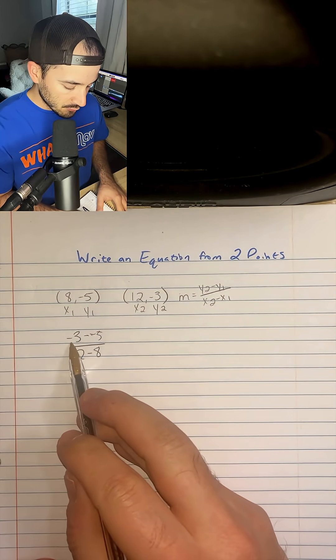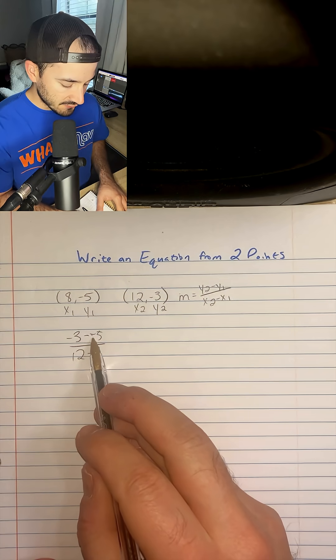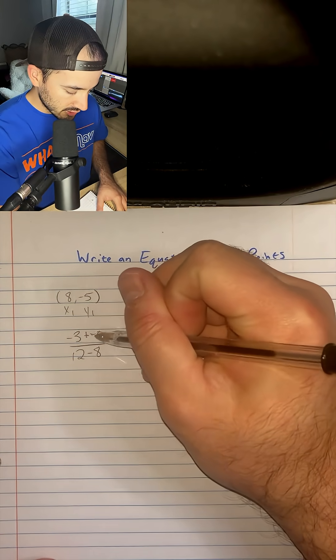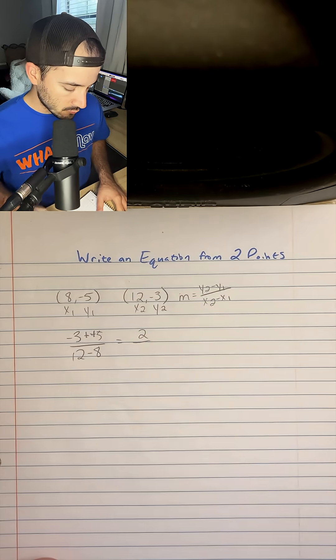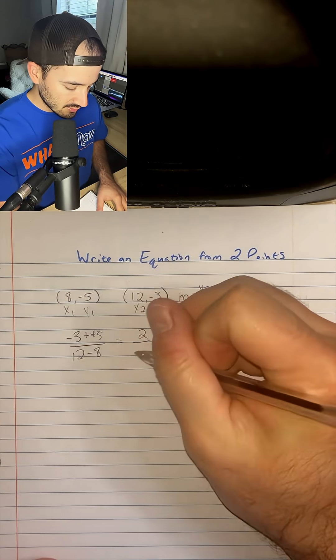All right, so negative 3 minus a negative 5 is the same thing as negative 3 plus positive 5. And that's going to be positive 2 over 12 minus 8, which is 4.